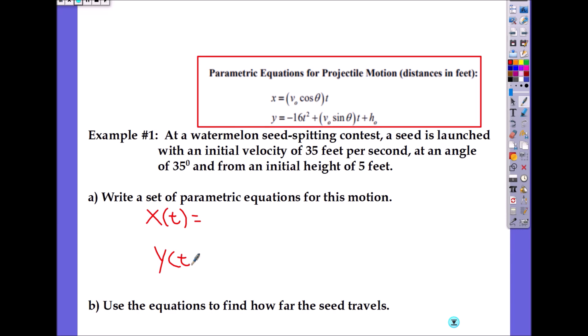X(t) was v₀ (initial velocity), which was 35 feet per second, so 35 times cosine of 35 degrees times t. T does not go inside the cosine—that's a common mistake. What about y? It's the gravity: negative 16t² plus 35 times sine of 35 degrees times t, and you add the initial height, which was 5.